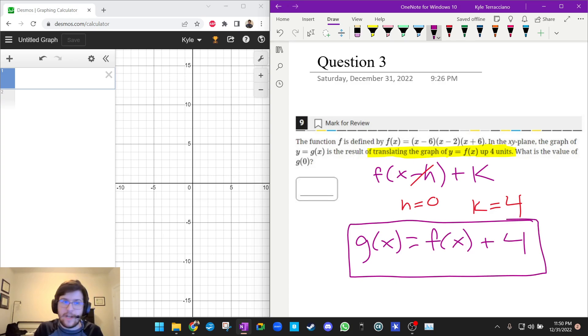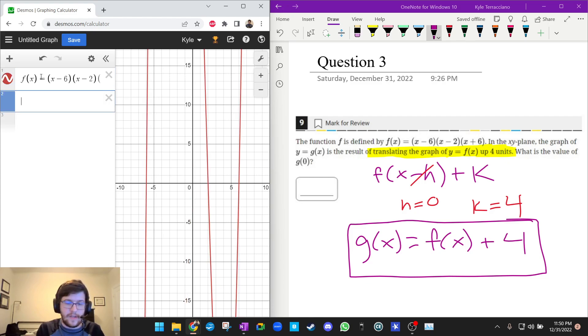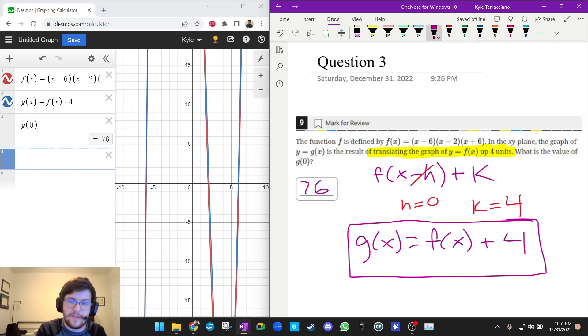So now that we've figured that out, now we can use Desmos to do the rest of the question. So f(x) = (x-6)(x-2)(x+6). And g(x) = f(x) + 4 based on what we came up with. They told us it was translating up 4 units. And this one, we don't really care about the graph, we just want to find g(0). So remember, we can evaluate functions just by typing in the function notation now that we have g(x) typed in. So g(0) is equal to 76. And the answer is 76.